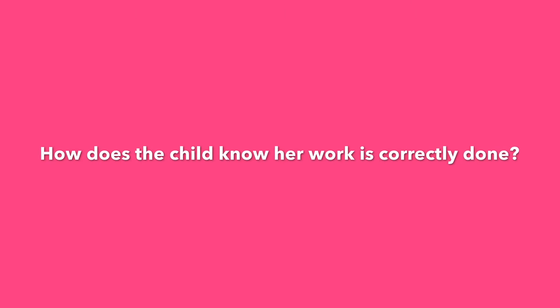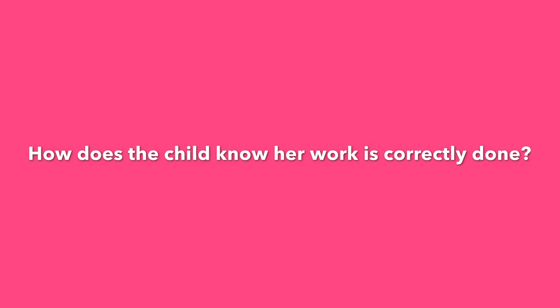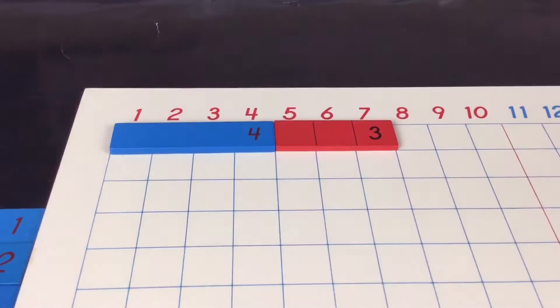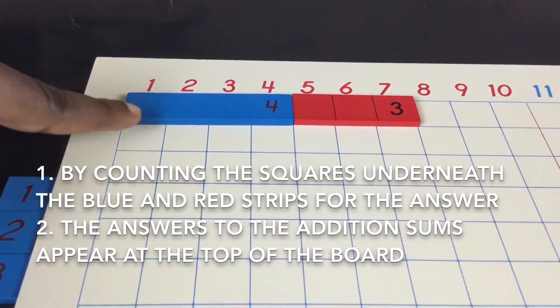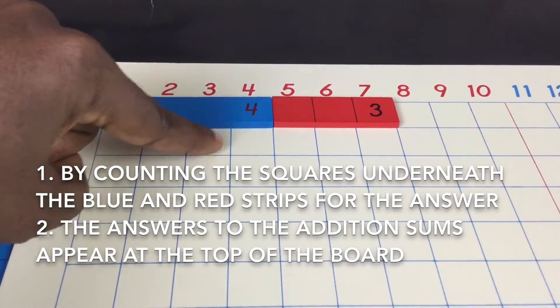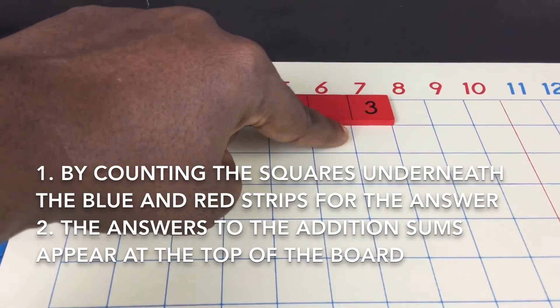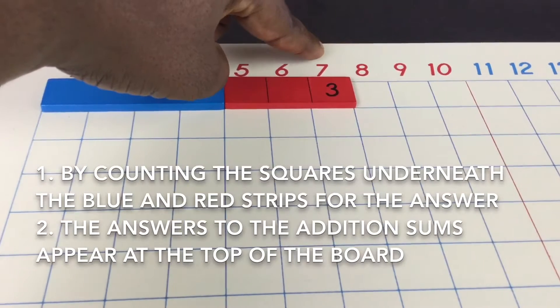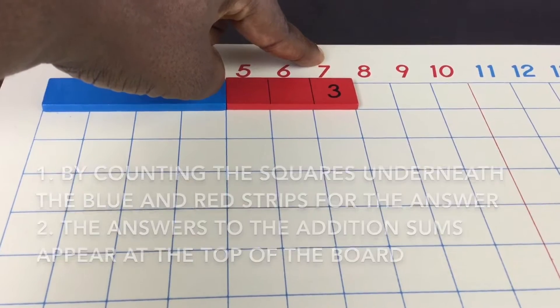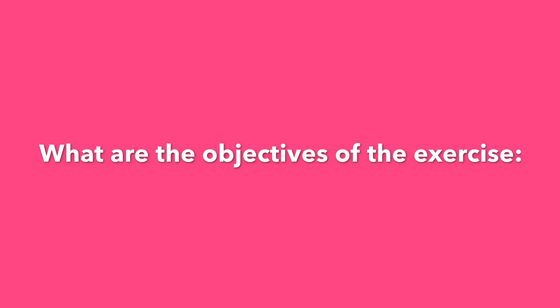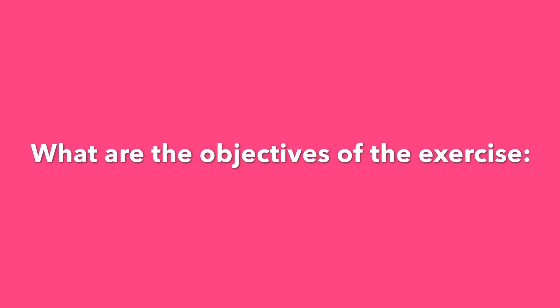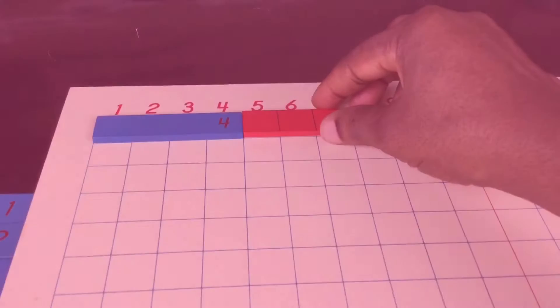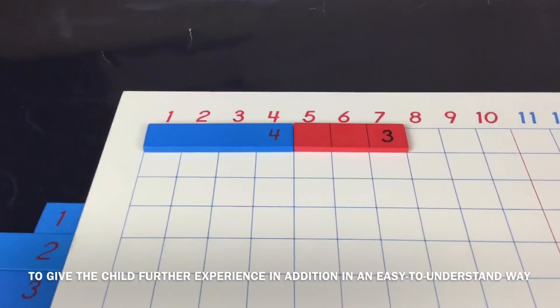How does the child know the work is correctly done? By counting the squares underneath the blue and red strip for the answer. The answers to the addition sums appear at the top of the board.